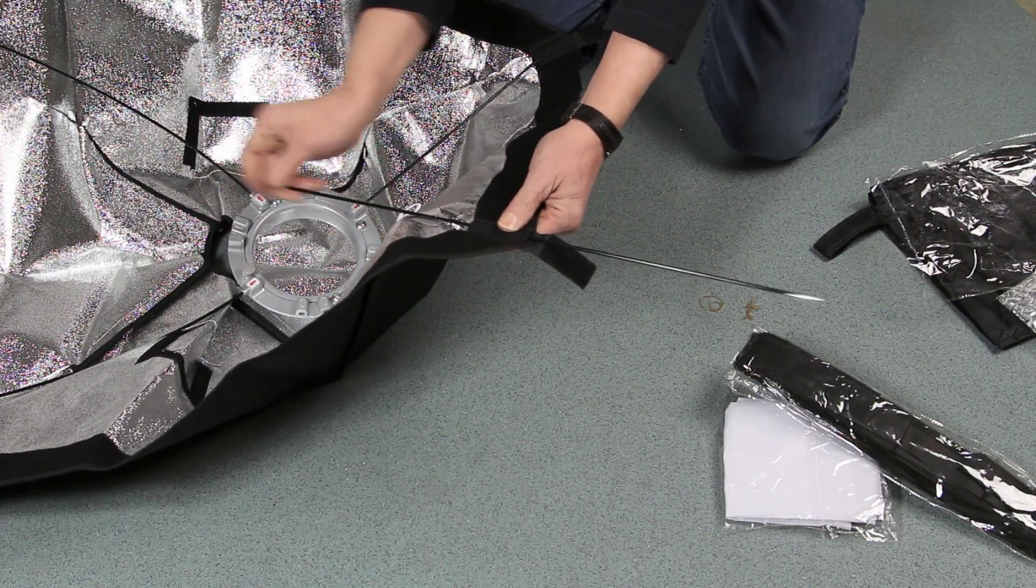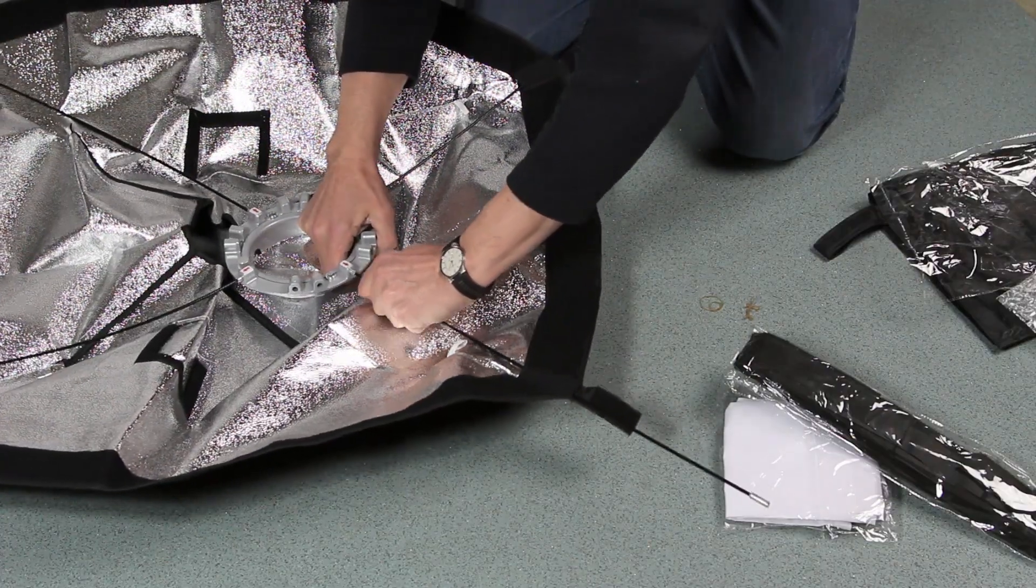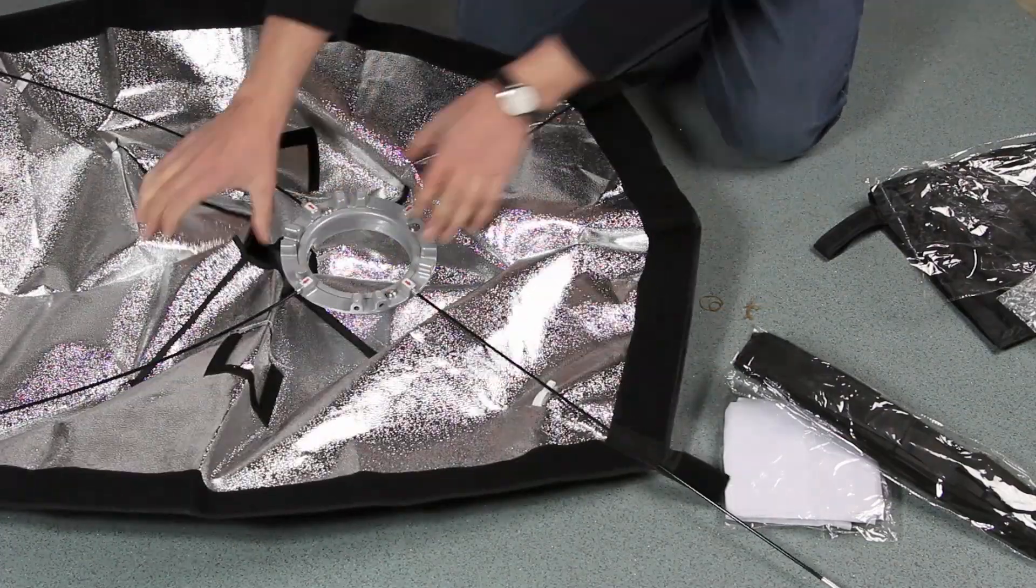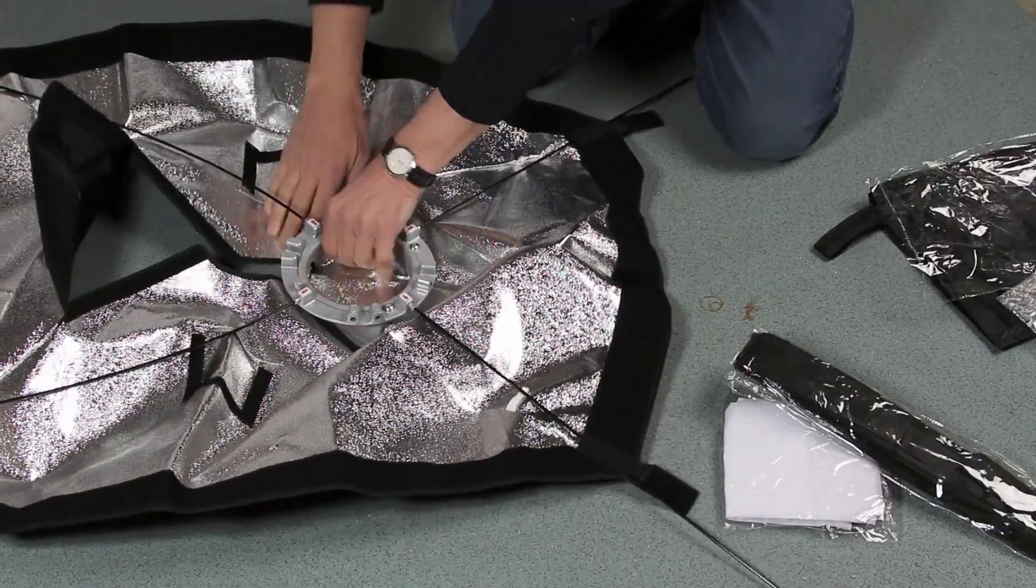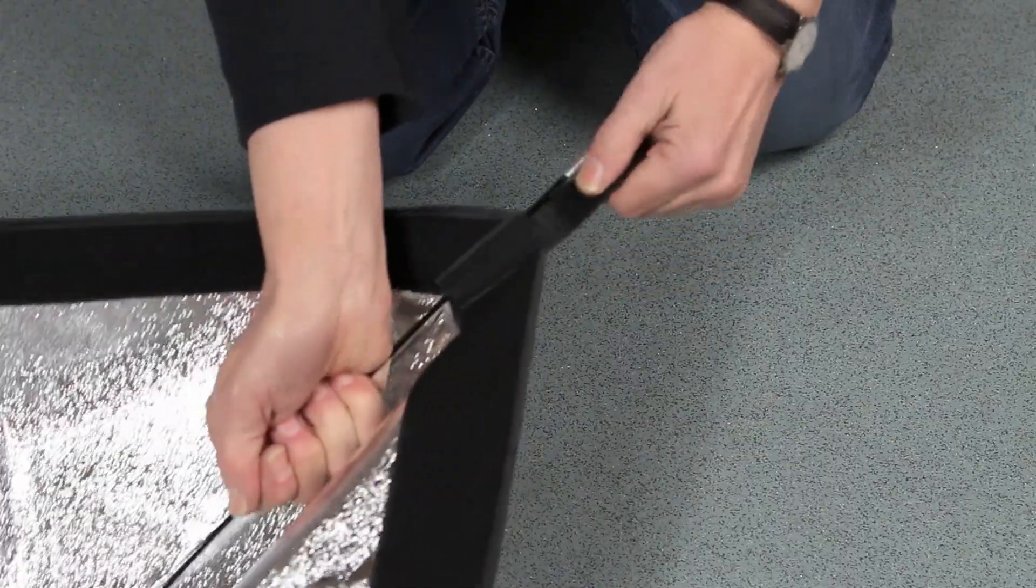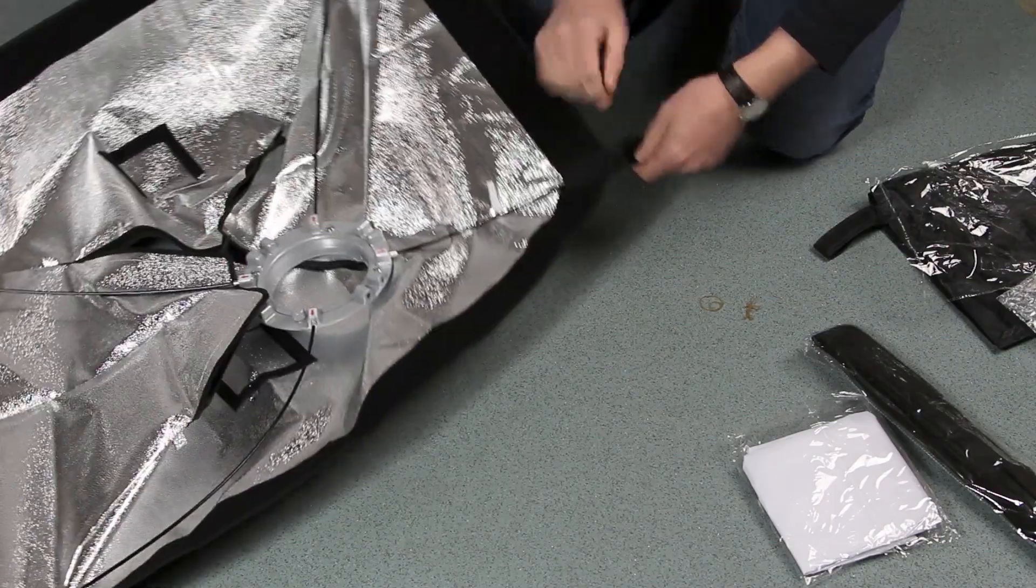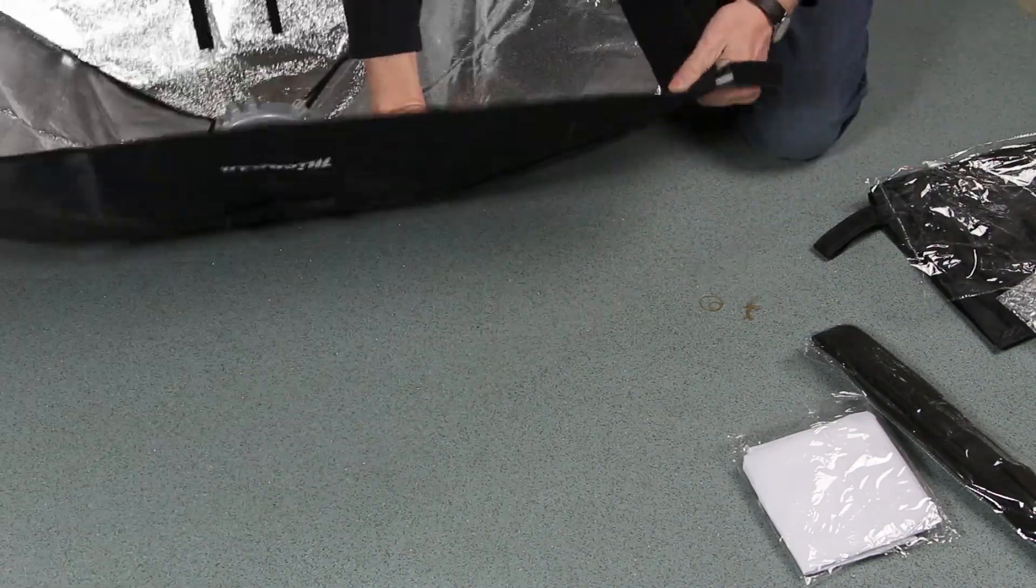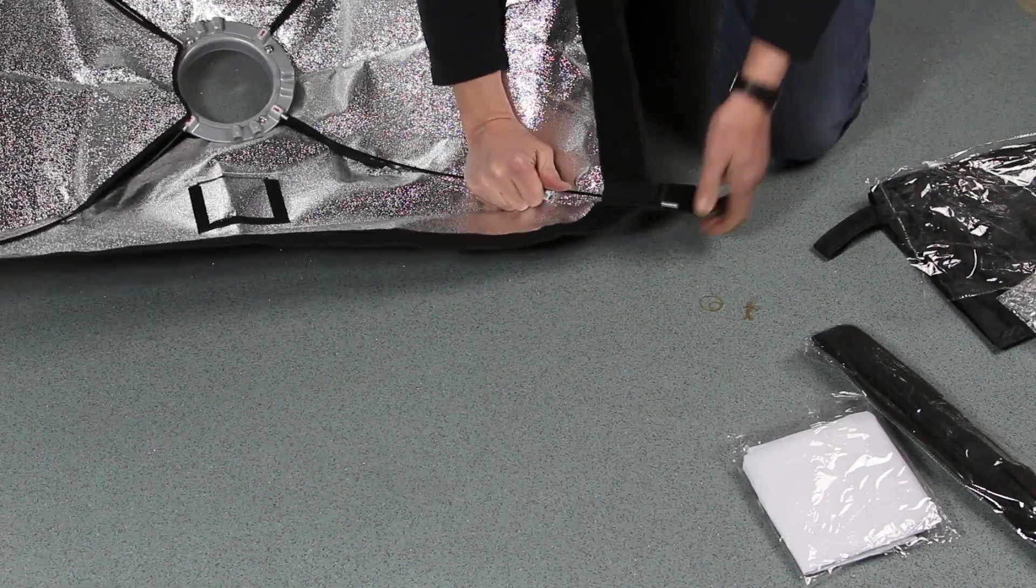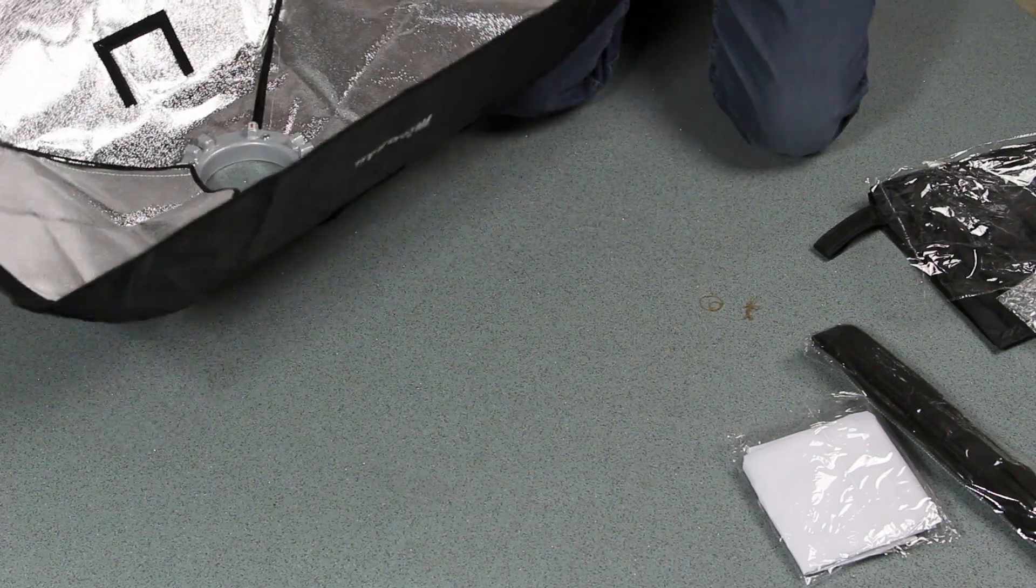There are three velcro flaps. You need to open up the velcro flaps, then grip the rod, pull it in, and pull the velcro over. Again for the last rod on this softbox, you pull the rod in, pull the velcro flap over and attach it.